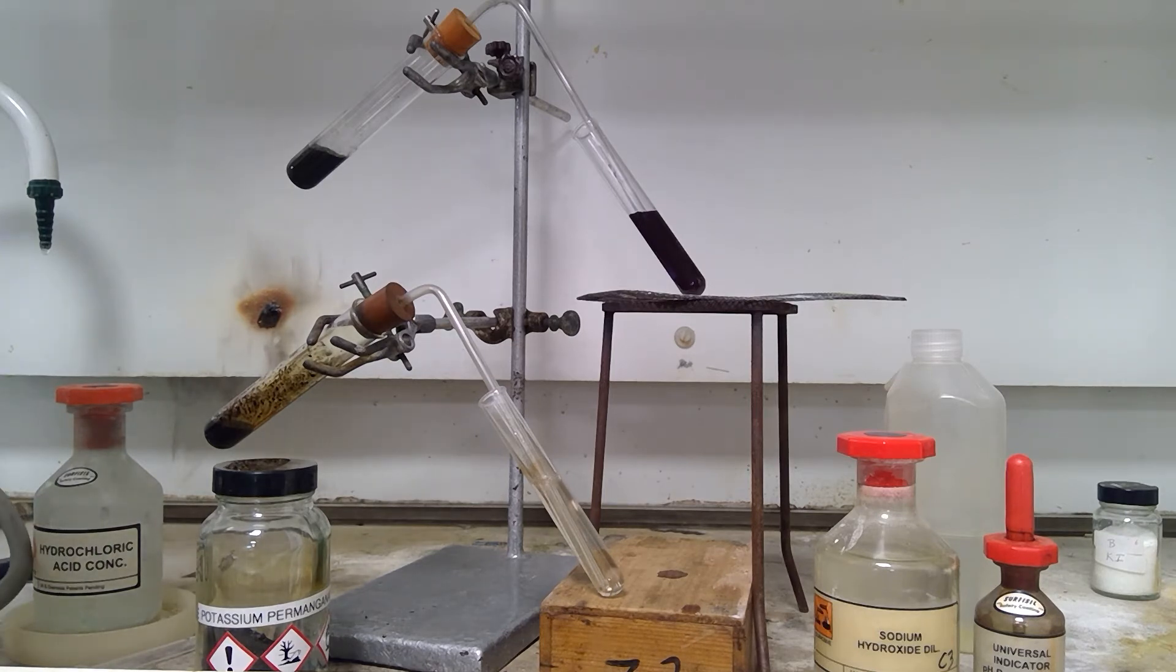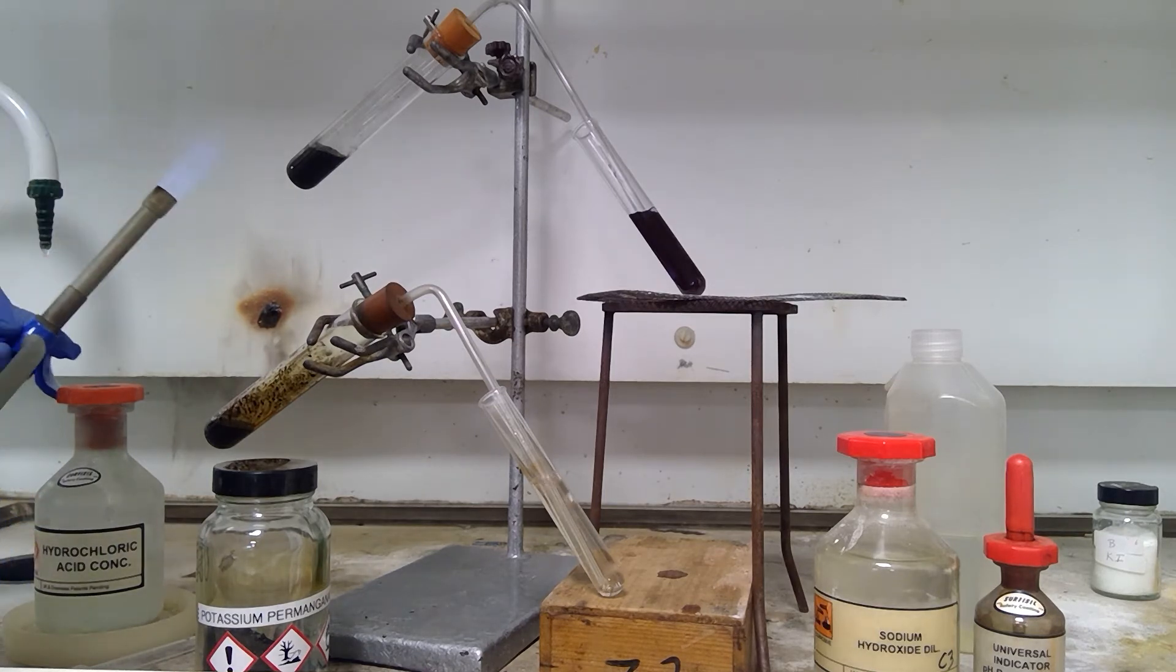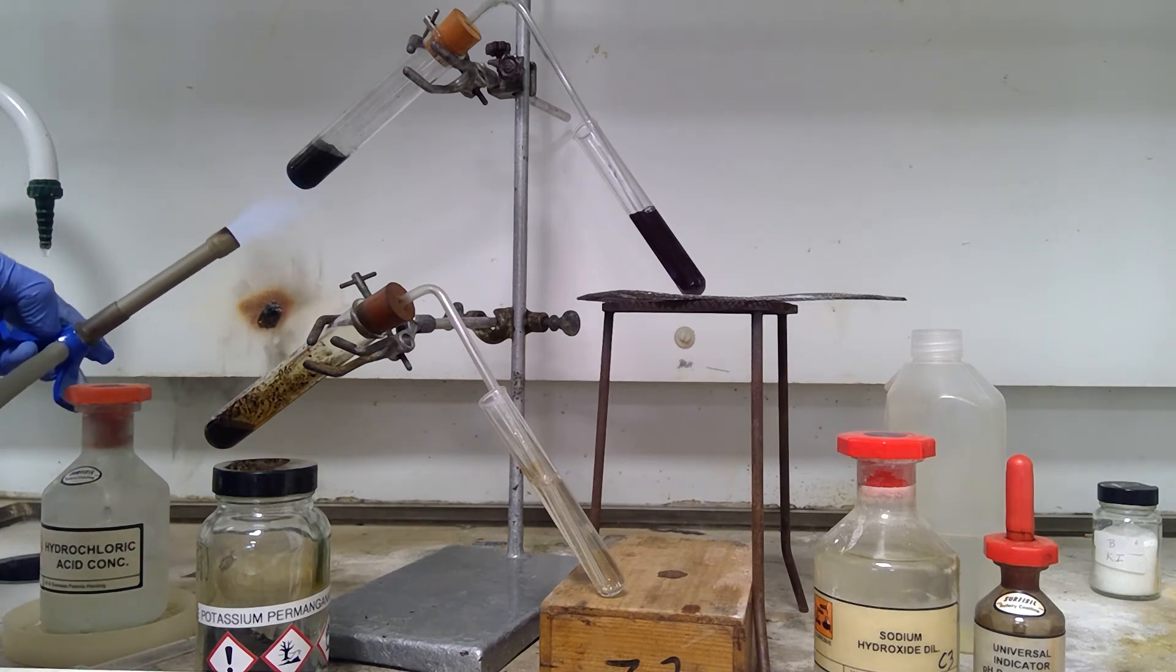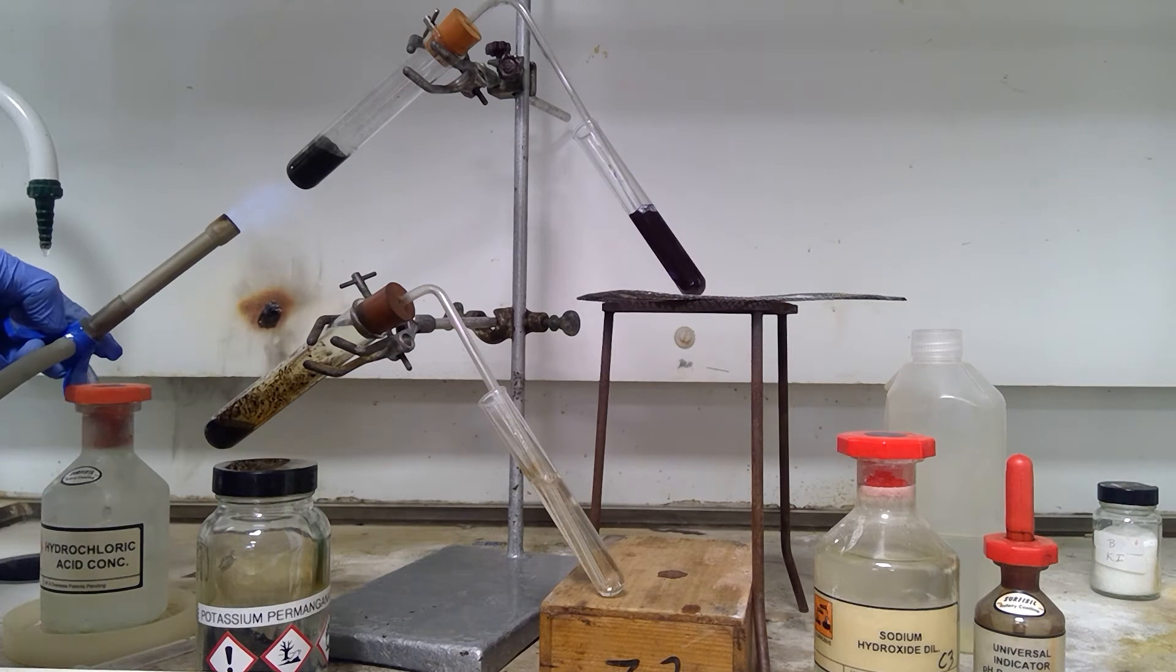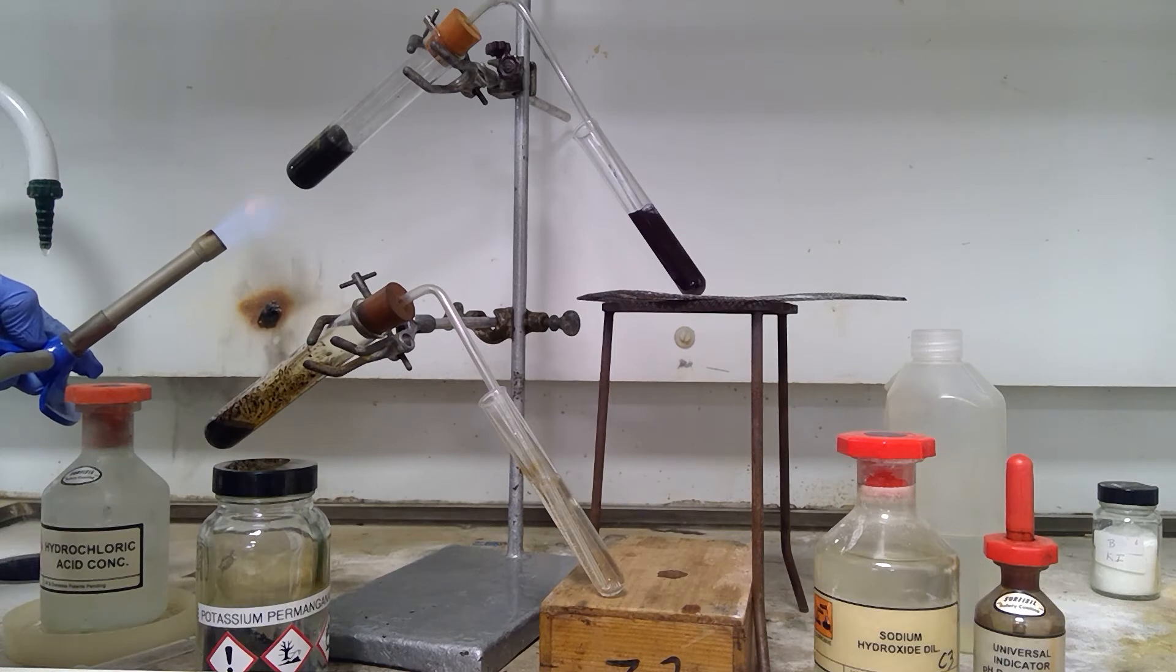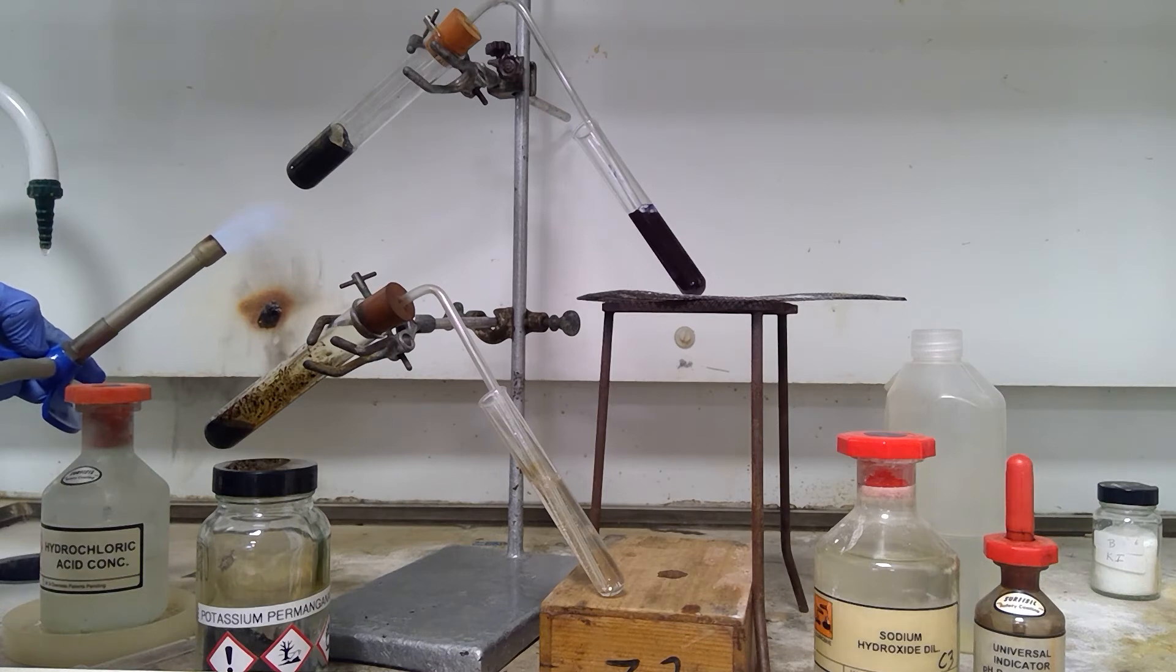But we will just encourage this by warming a little bit. And this can be seen as well in the video produced by Dr. Morse, where he looks at using this reaction to produce some chlorine for a displacement. Just warm this gently, and you can see that a gas is being produced, but clearly at a much lower rate than the rate that we get with the permanganate.